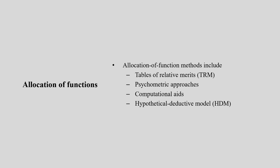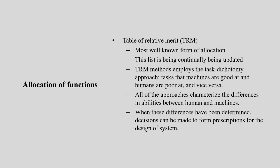For allocation of function, two types of methods are very common. One is the Table of Relative Merit (TRM), and another is the Hypothetical Deductive Model (HDM). TRM and HDM are the most prominent in the literature, though there are others like psychometric approaches and computational aids.